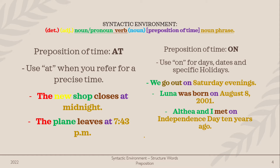The syntactic environment for preposition of time is: optional determiner, optional adjective, noun or a pronoun, verb, another noun (which is optional), then a preposition of time, and lastly another noun phrase. The preposition 'at' is used when you refer to a precise time. In the given examples, without the determiner and adjective, these sentences will still be understandable and complete.